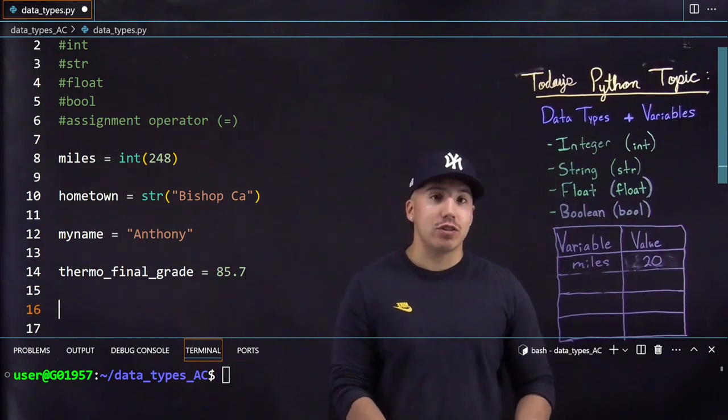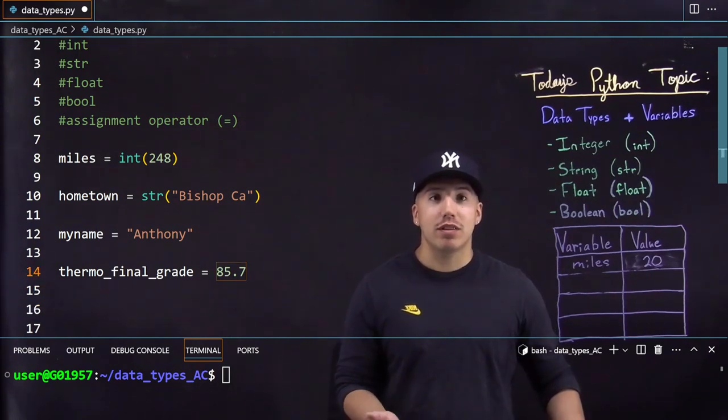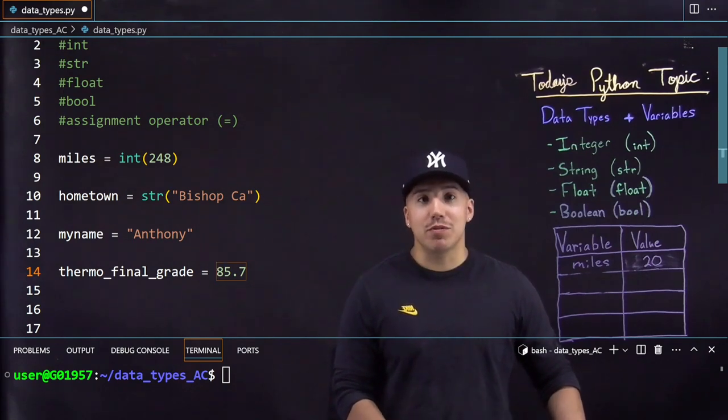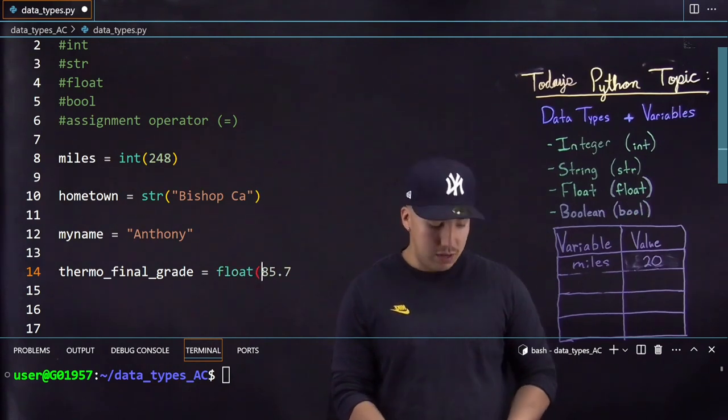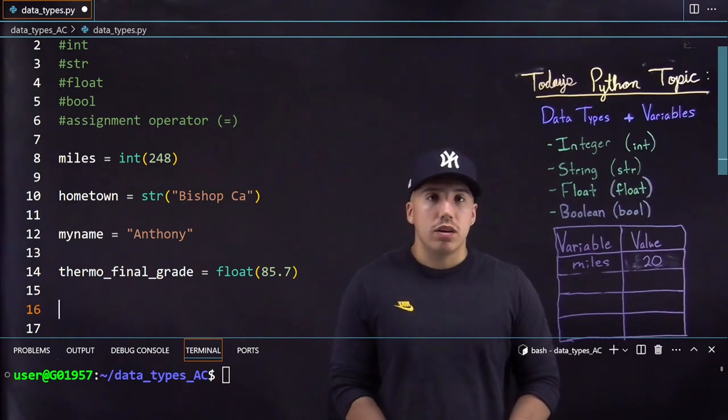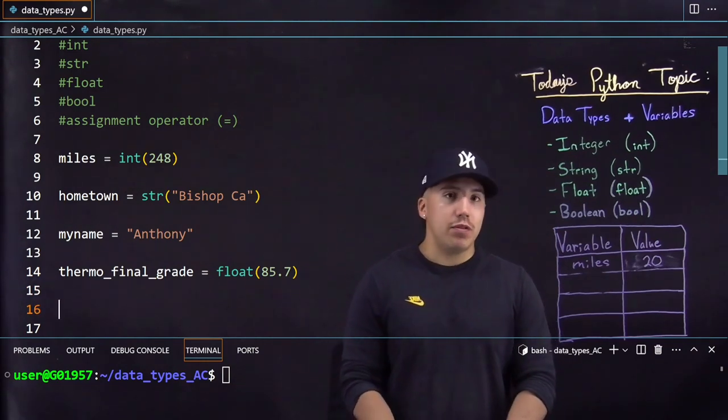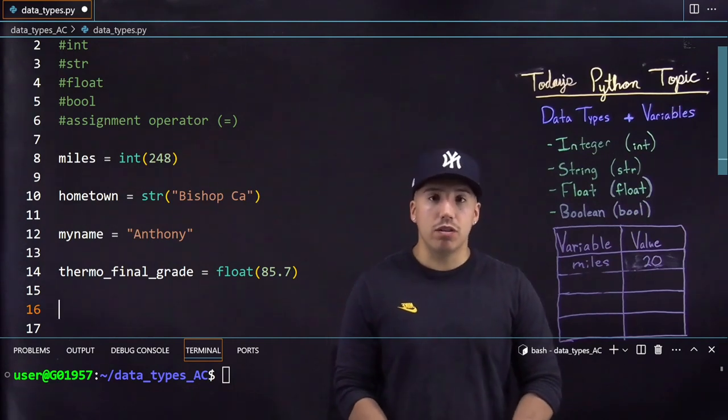So right there I assumed that the computer was gonna pick up that decimal point and know that that was gonna be a float. Just like the last time I'm gonna repeat this, but same thing you could put float within these parentheses to make sure it's a float. One thing to keep note of if you wanted to get an integer and turn it into a float it would just add a point zero to the end if that makes sense.